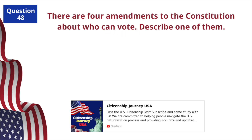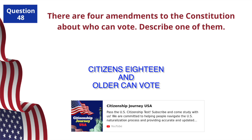There are four amendments to the Constitution about who can vote. Describe one of them. Citizens 18 and older can vote.